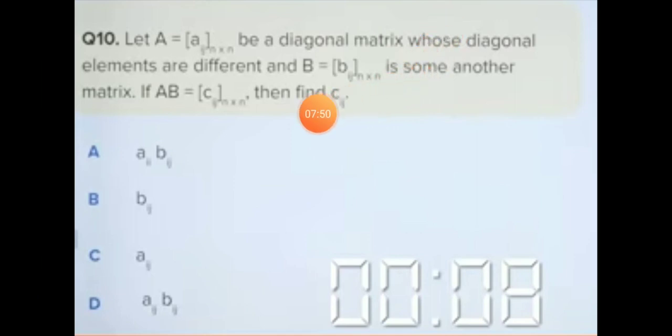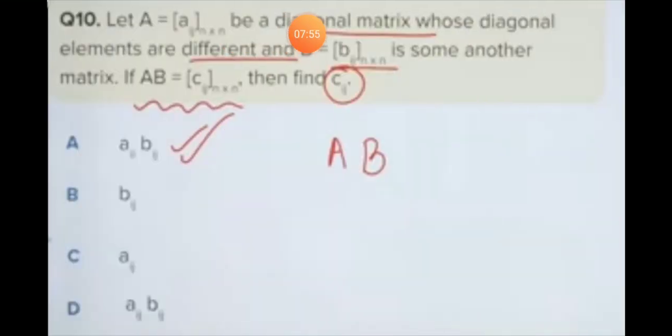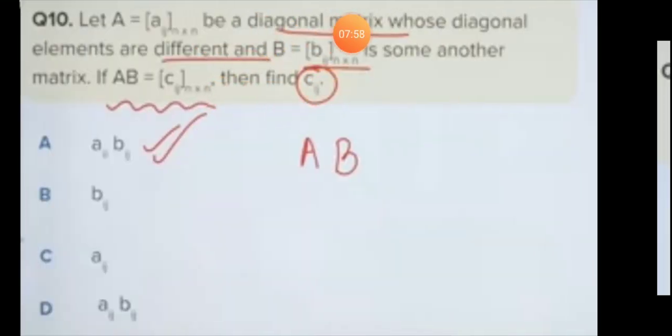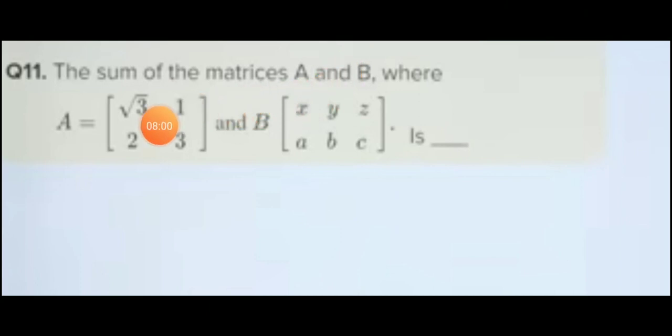Question 11 asks for the sum of matrices A and B, where A is a 2 by 2 matrix and B is a 2 by 3 matrix. The first matrix order is 2 by 2, and the other matrix order is 2 by 3.